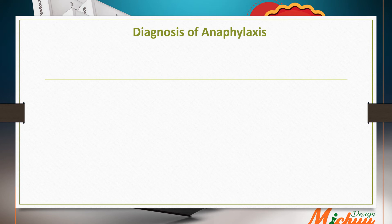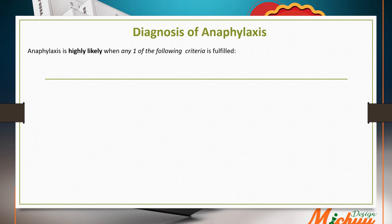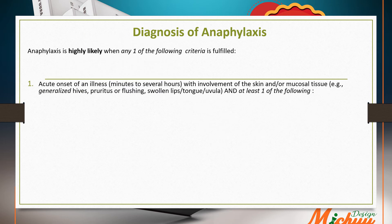Since no single laboratory finding confirms anaphylaxis, a National Institutes of Health-sponsored expert panel developed diagnostic criteria. The differential diagnosis includes other forms of shock such as hemorrhagic, cardiogenic, and septic; vasopressor reactions including flushing syndromes such as carcinoid syndrome; monosodium glutamate ingestion; hereditary angioedema; panic attacks; vocal cord dysfunction; pheochromocytoma; and Red Man syndrome caused by vancomycin.